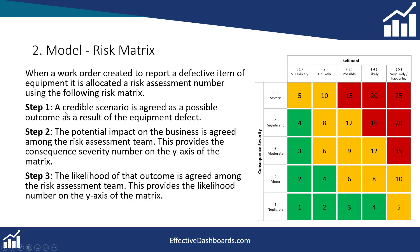In terms of the business process that risk-ranks a work order, once we've got a credible scenario — what could happen if we continue with the equipment defect or equipment out of service — we look at the potential impact on the plant. Could it happen now, or is it likely to happen at some point in the future? From likely, possible, unlikely, to very unlikely. Then we look at how severe that impact could be. For example, if a pump is out of service and we have a backup pump, how likely is it that the backup also fails? What's the mean time to failure, when was it last overhauled, how often has it failed in the past? We then assess the likelihood of it failing and the impact on the plant's ability to produce, which could be significant, moderate, or severe.